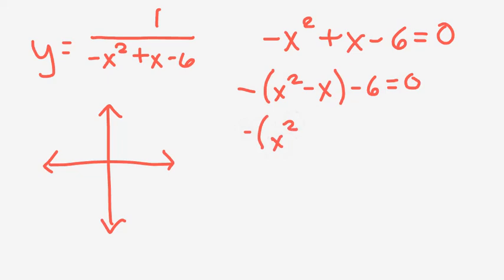Negative 1 divided by 2 is negative 1 over 2, and negative 1 over 2 squared is plus 1 over 4. Now seeing as I added 1 over 4, and then multiply it by negative 1, I'm going to need to do the opposite outside of the brackets.